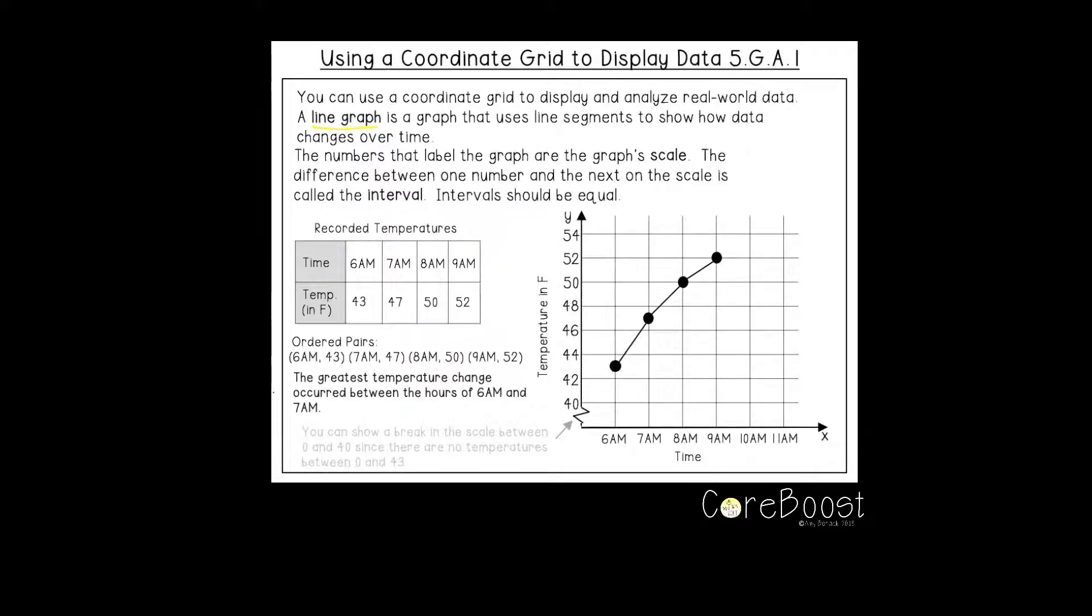So let's take a look at our x axis here and you'll see that every hour is marked between 6 and 11. So my interval is one hour and I've labeled the x axis as time.